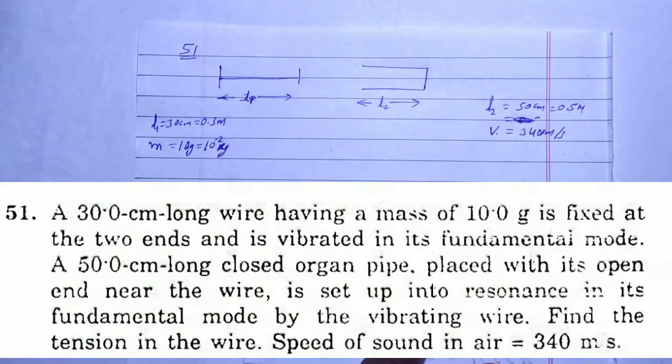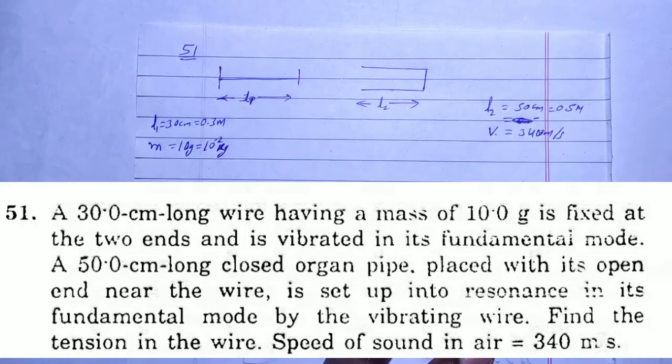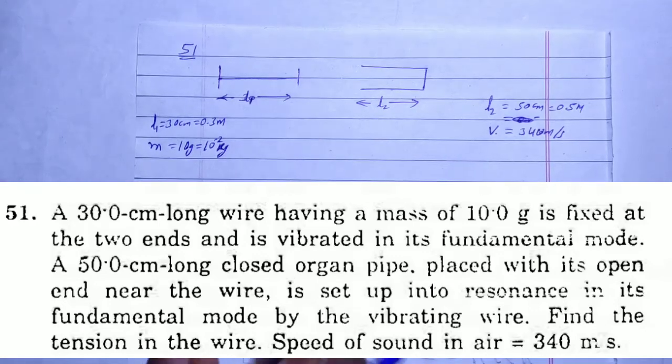Solution to chapter 16 sound wave, question number 51. A 30 centimeter long wire with a mass of 10 grams is fixed at two ends and is vibrating in its fundamental mode. A 50 centimeter long closed organ pipe, placed with its open end near the wire, is set up into resonance in its fundamental mode by the vibrating wire. Find the tension in the wire. Speed of sound in air is 340 m/s.